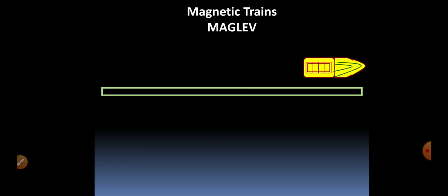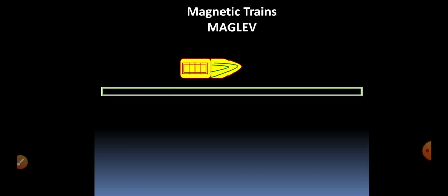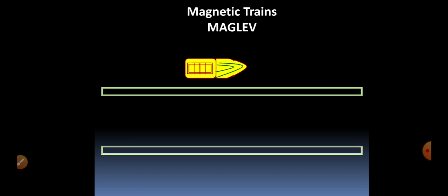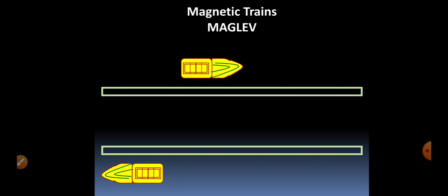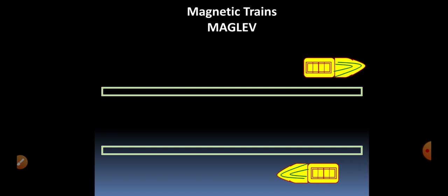By using the Meissner effect, the maglev moves along the track. Only magnetic lines of force are used to elevate the train from the track and to accelerate it in the forward direction.